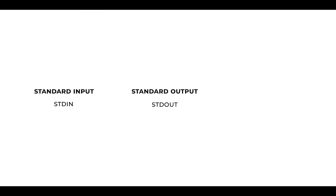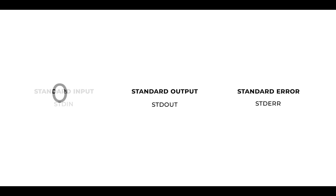For the scope of this crash course, I will be going over the very basics. Before starting with input and output redirection, let's first understand the types — often abbreviated as IO. In Linux, we have standard input, standard output, and standard error. Standard input is stdin, standard output is stdout, and standard error is stderr. These also have file descriptors: stdin is 0, stdout is 1, and stderr is 2.